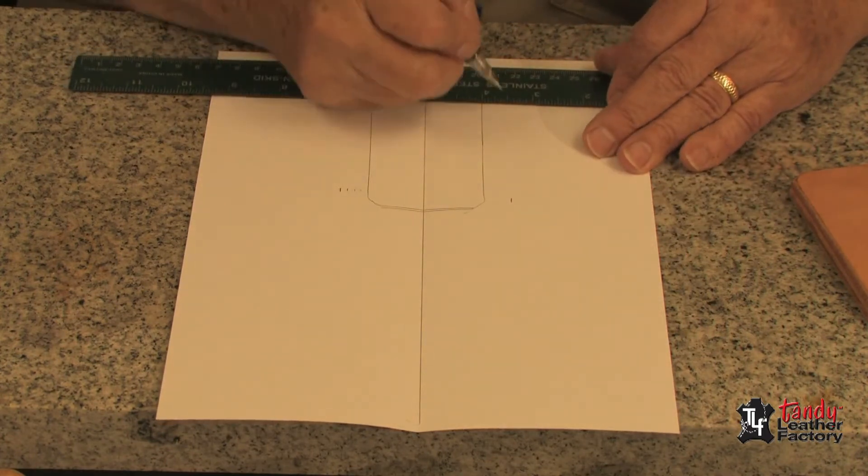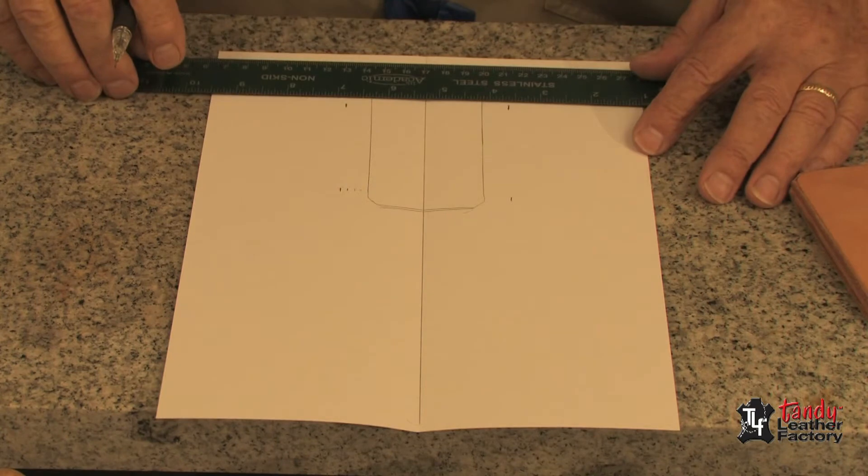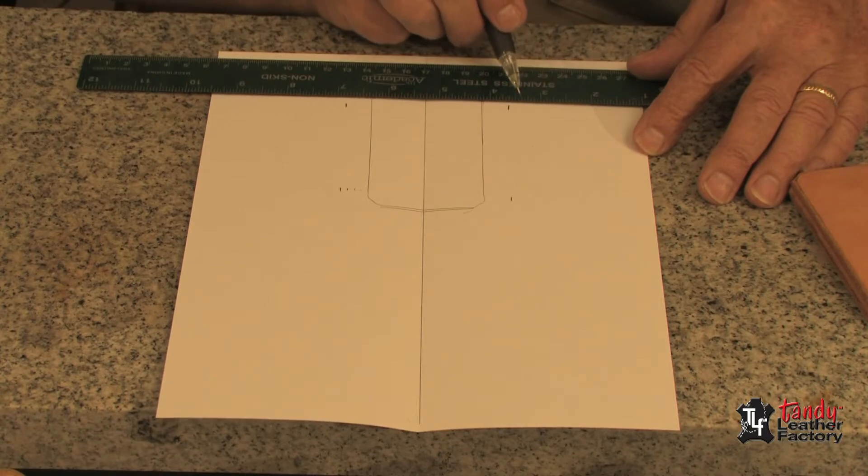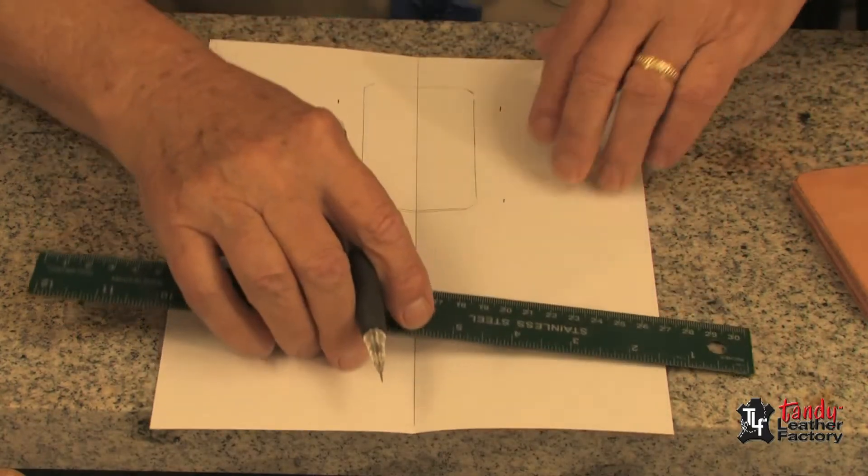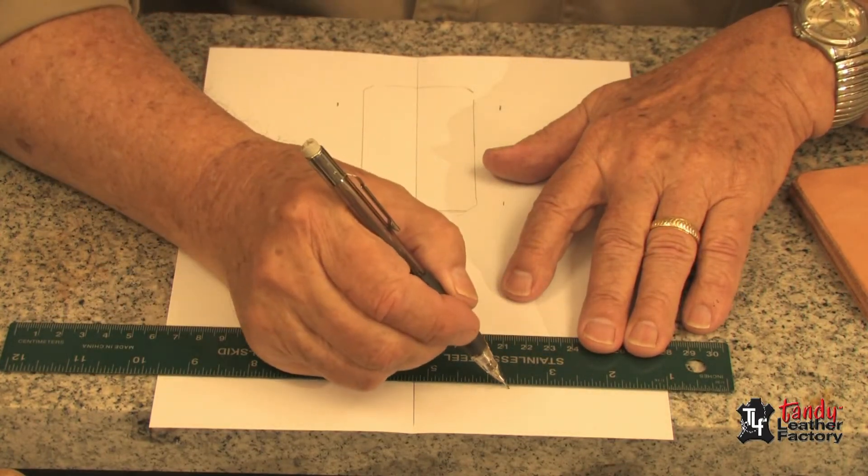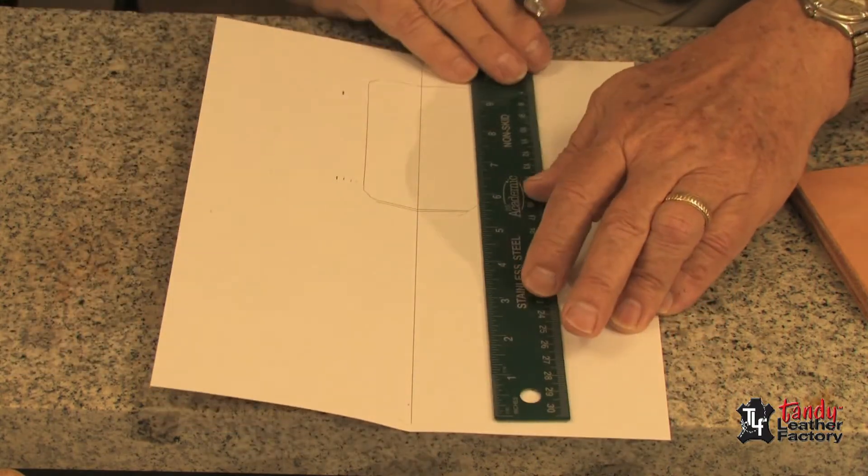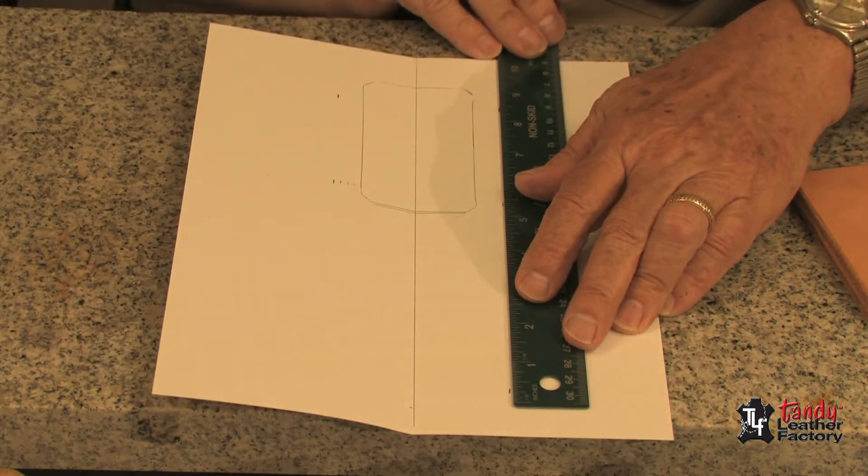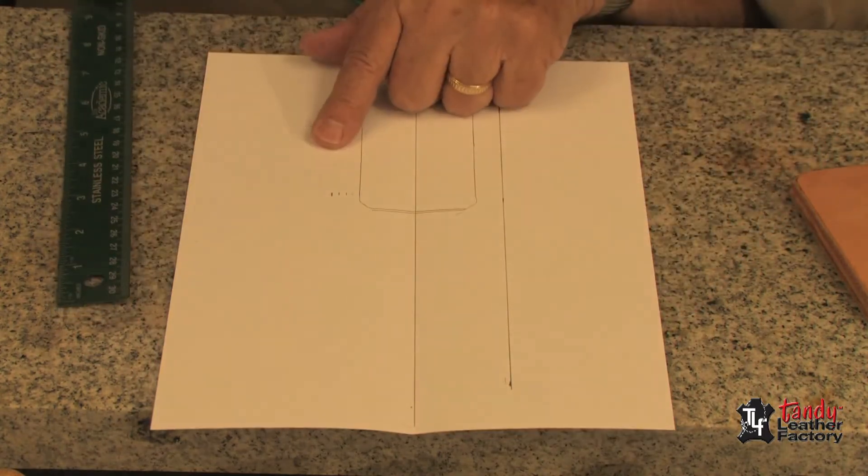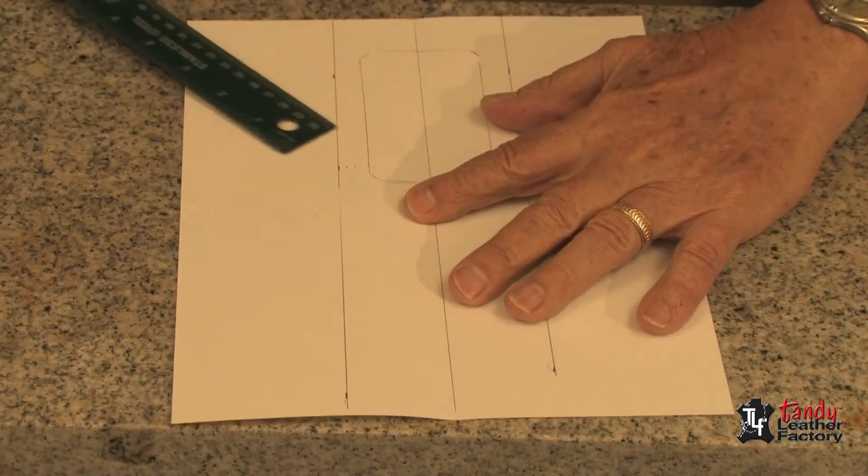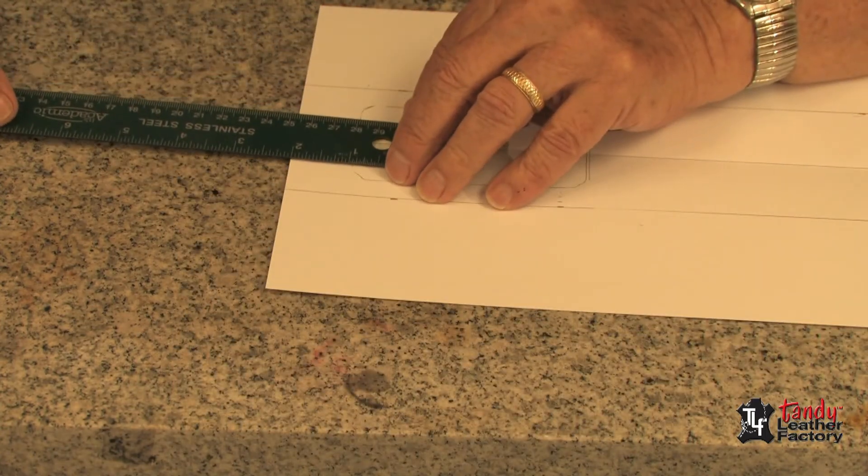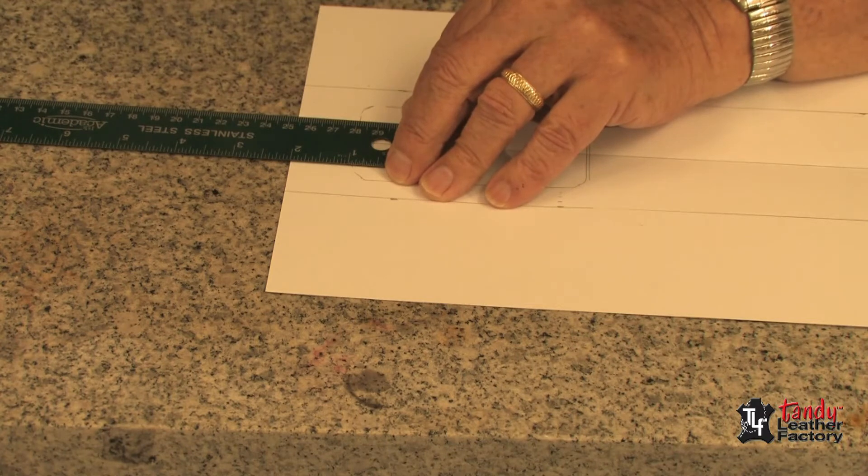Now we will measure the distance in from the edge and it's about two and five-eighths. So we'll come up here and make a mark at two and five-eighths. Now we will draw a line that whole distance. We'll do the same thing now on the other side. And now we will do the same thing to the bottom. We will add a half inch.